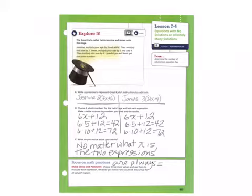Explore it. The great Carlo called twins Jasmine and James onto the stage. Jasmine, multiply your age by 3 and add 6. Then multiply this sum by 2. James, multiply your age by 2 and add 4. Then multiply this sum by 3. I predict you will both get the same number. Complete parts A, B, and C on your paper.